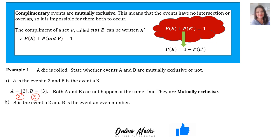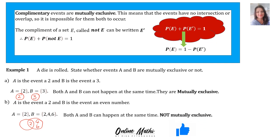Number B: A is the event of rolling a 2, and B is the event of rolling an even number, so B = {2, 4, 6}. The Venn diagram shows that A is just {2} and B includes 2, 4, 6, etc. The common element to both is the number 2, so both A and B can happen at the same time — they are not mutually exclusive.